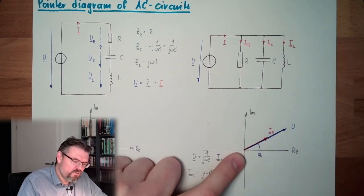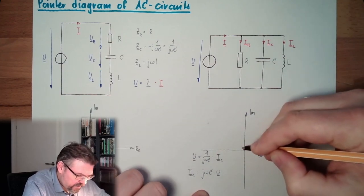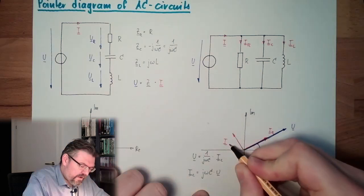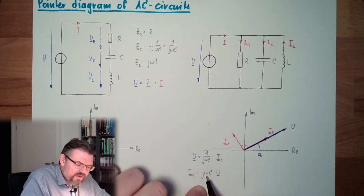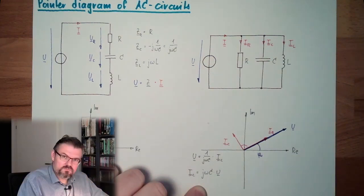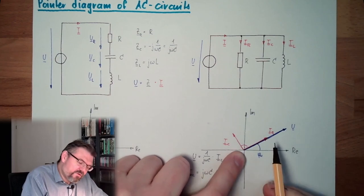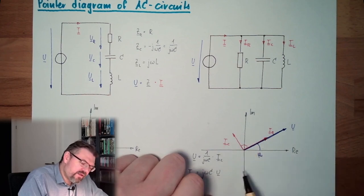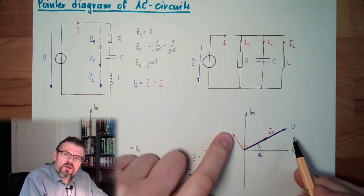We have VU plus 90 degrees and a certain length. So we have here IC. We have here 90 degrees because J omega has 90 degrees. This means actually we have to keep in mind that it's rotating in a mathematically positive way. And IC is before U, this is clear.